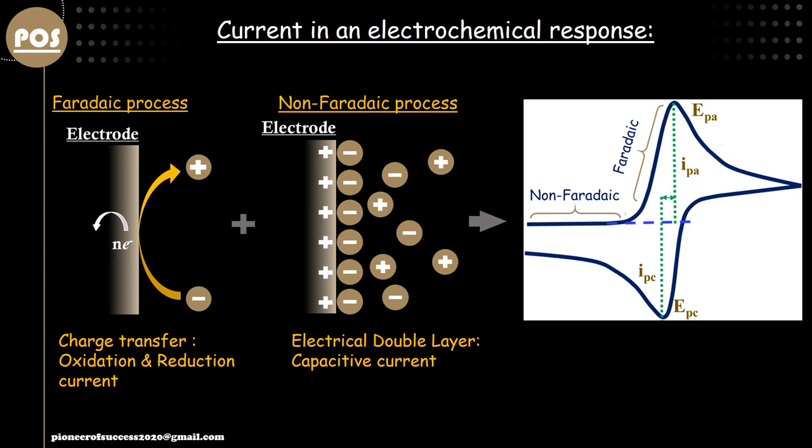In an electrochemical operation, we have current coming from contributions of both Faradaic and Non-Faradaic processes — it is a mixture of current. If there is an increment of current, I cannot tell whether that increment is happening due to the capacitive contribution or due to the Faradaic contribution. But if I can remove the capacitive current and then there is an increment of current, I can tell that increment is only due to the Faradaic reaction. Today we will talk about how exactly we can nullify this capacitive current with the help of DPV — and that is the heart of the story.